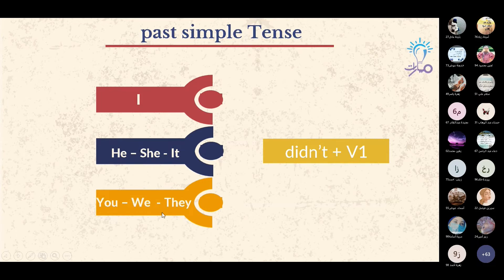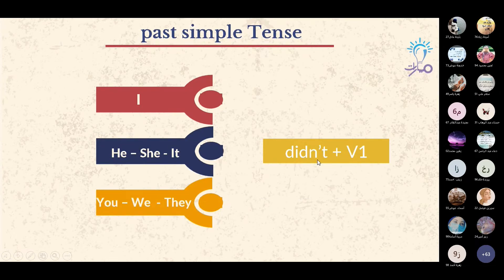جميع الضمائر: I, he, she, it, you, they — تأخذ didn't. إذن: الفاعل + didn't + verb one. باختصار، شكل النفي لابد من استخدام didn't زائد التصريف الأول للفعل.